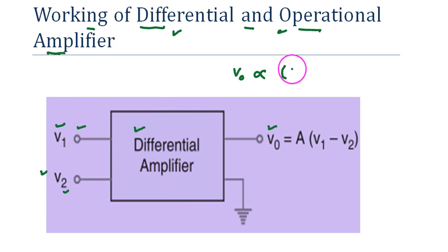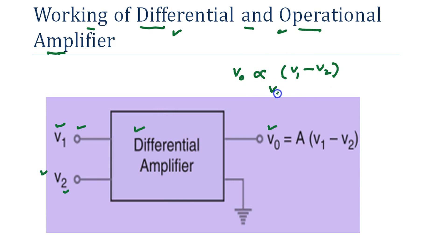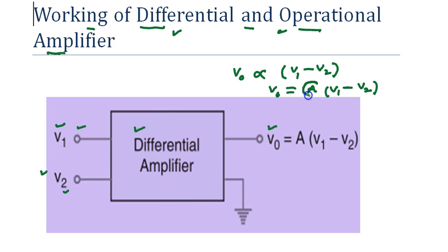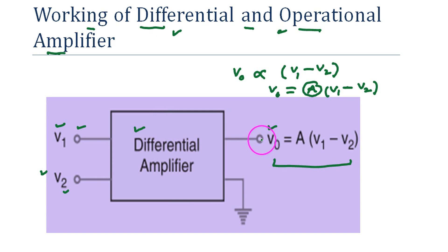V0 is proportional to V1 minus V2. Replacing the proportional sign with a constant A, that constant A is called the gain of the differential amplifier. The gain A equals V0 divided by the difference between the two signals.